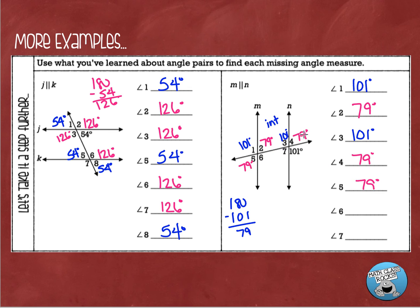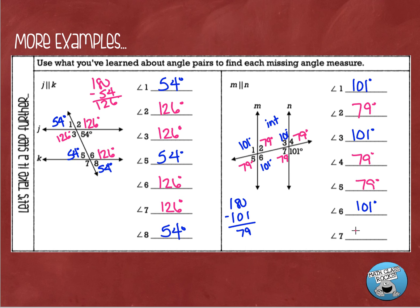Angle 5 is also alternate exterior with angle 4. Angle 6 is vertical to angle 1, making it 101 degrees — it's also alternate interior with angle 3. Angle 7 is vertical with angle 4, so it's 79. It's also alternate interior with angle 2, and it makes a straight line with angle 3 or the original 101 degree angle. So for all those reasons, angle 7 is 79 degrees.